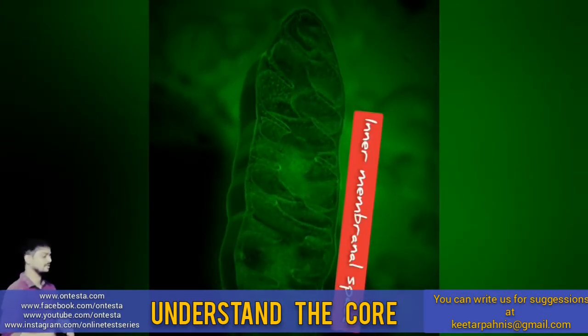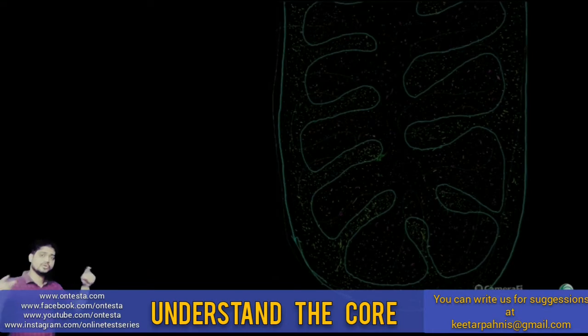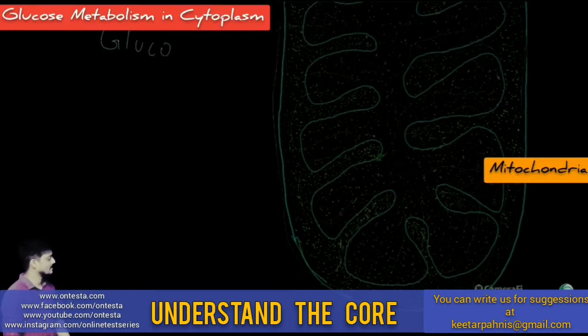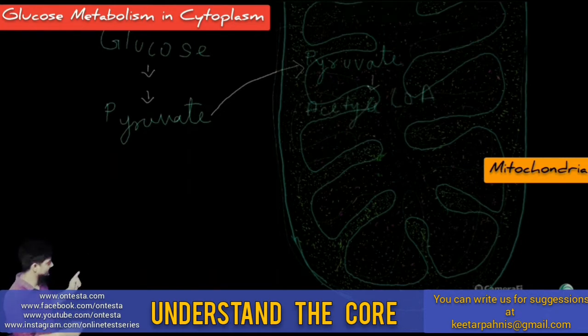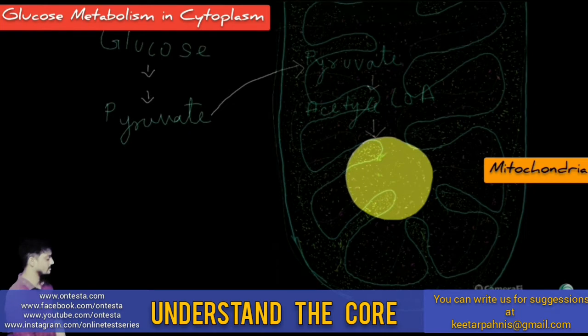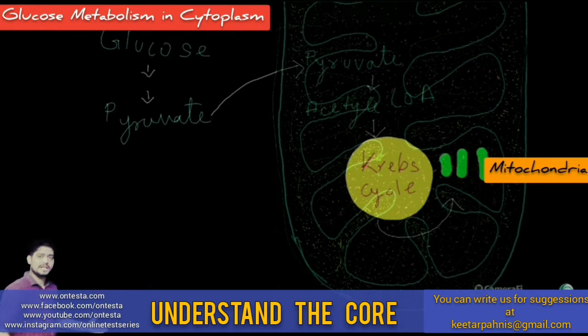Let's understand what happens after glycolysis in the cytoplasm. After the conversion of glucose into pyruvic acid, which is a 3-carbon compound, it enters into the mitochondrial matrix. Here in the presence of oxygen, it is converted into acetyl coenzyme. This acetyl coenzyme is accepted by oxaloacetate to run the Krebs cycle.